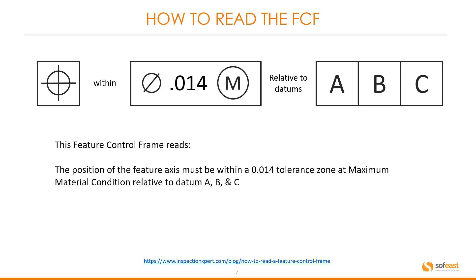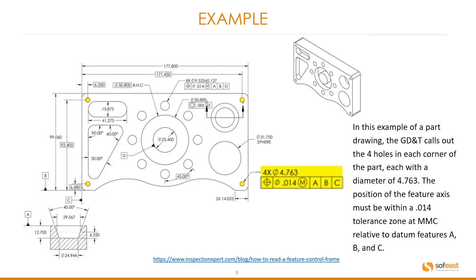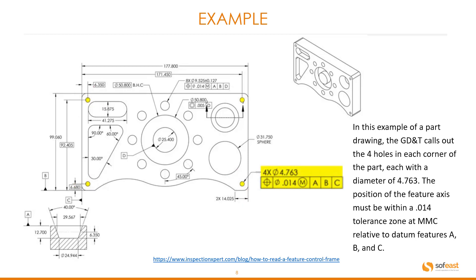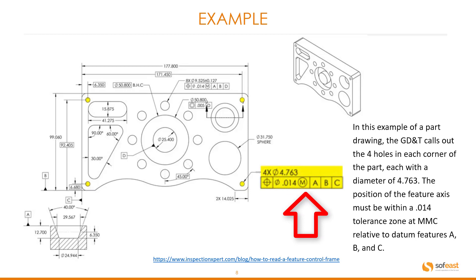How to read the feature control frame. Looking at this example, the position of the feature axis must be within a 0.014 tolerance zone at maximum material condition relative to datums A, B and C. Here's an example of the feature control frame as shown in the previous slide. In this example of a part drawing, the GD&T calls out the four holes in each corner of the part, each with a diameter of 4.763. The position of the feature axis must be within a 0.014 tolerance zone at maximum material condition relative to datums A, B and C.